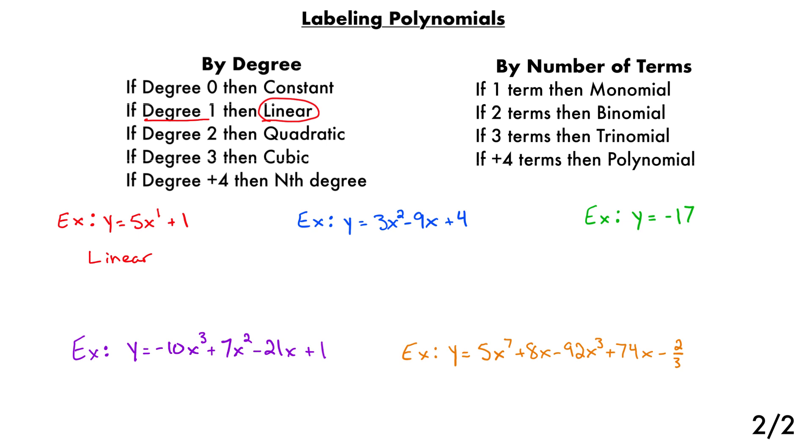Next, we're going to look at how many terms there are. That's how many pieces. Pieces are broken up based upon addition and subtraction. So this is 5x plus one. So there are two pieces to this problem. There are two terms, so we call that a binomial. Bi meaning two, like a bicycle. Binomial means two terms. So it's a linear binomial. And this would be the proper name for the first equation.